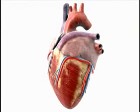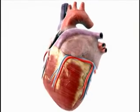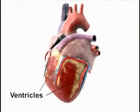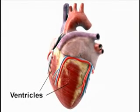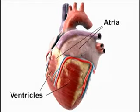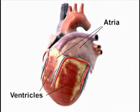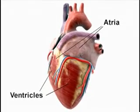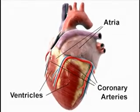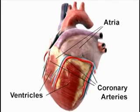Basically, the heart is a pump. Its purpose is to circulate blood to all of the organs of the body. The heart is made up of four chambers: two ventricles that pump blood out of the heart, and two atria which hold the blood returning to the heart. The heart receives its entire supply of blood through three coronary arteries.